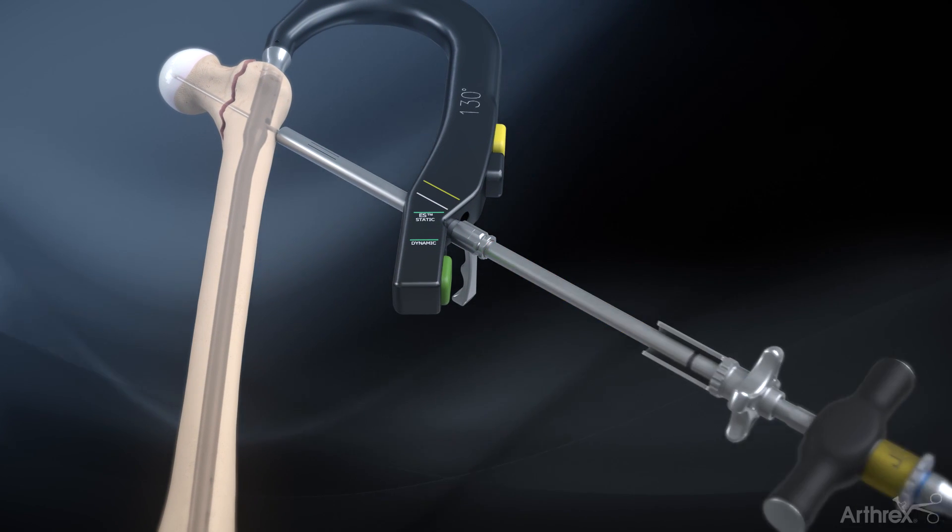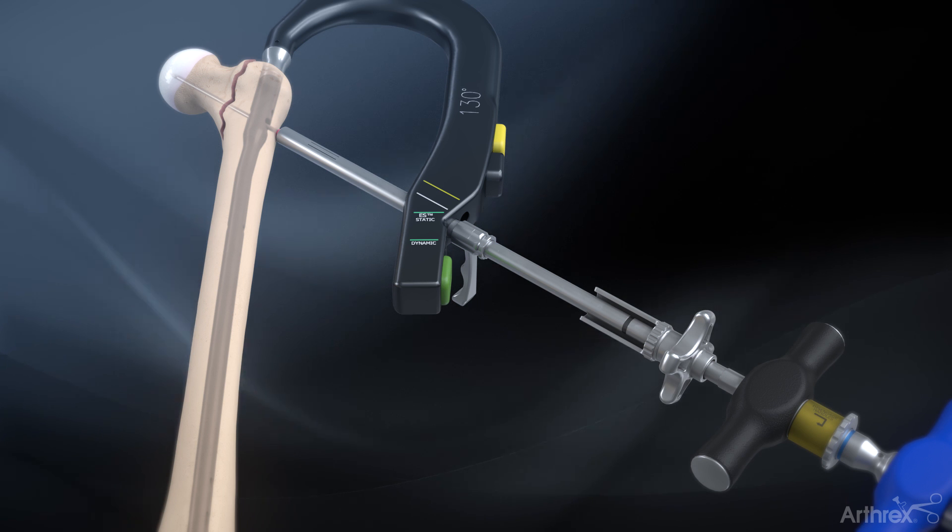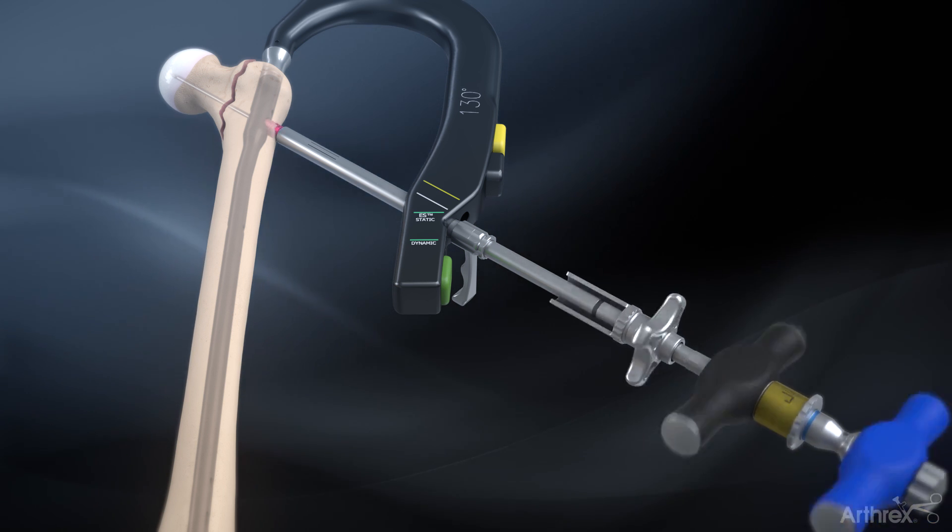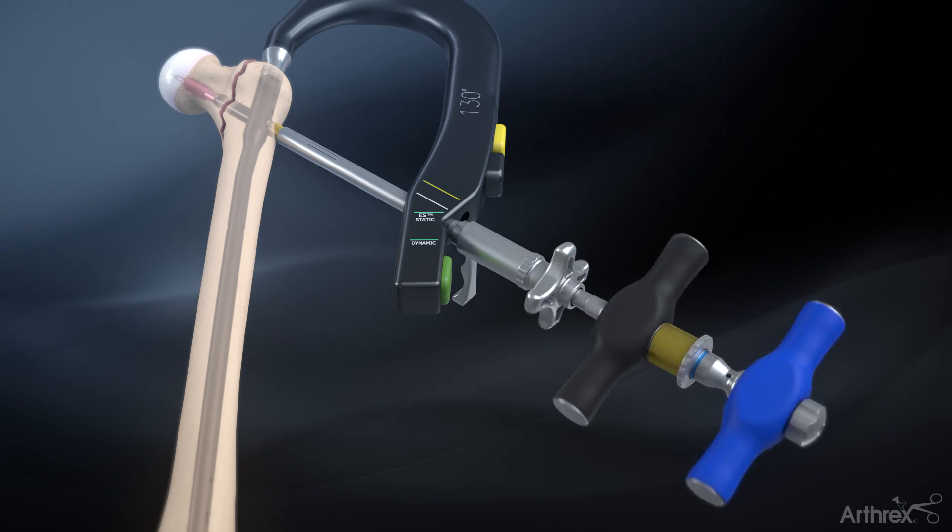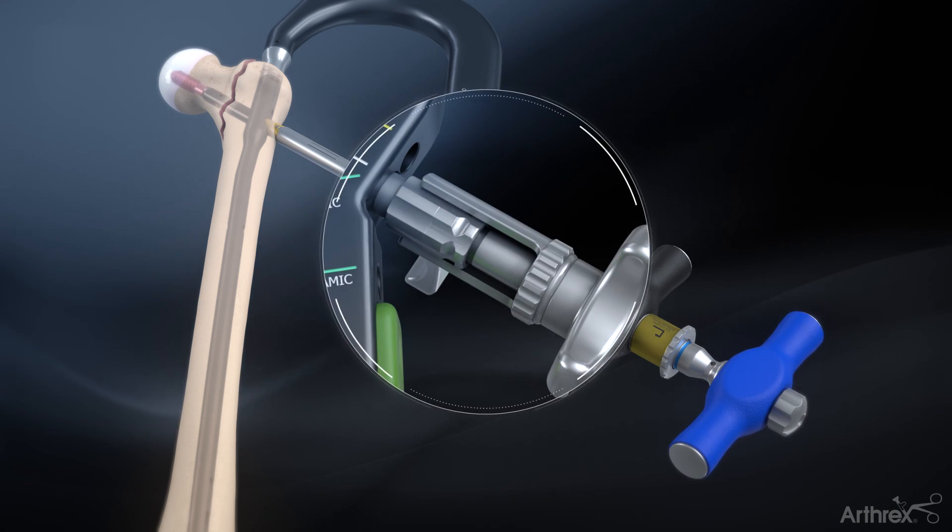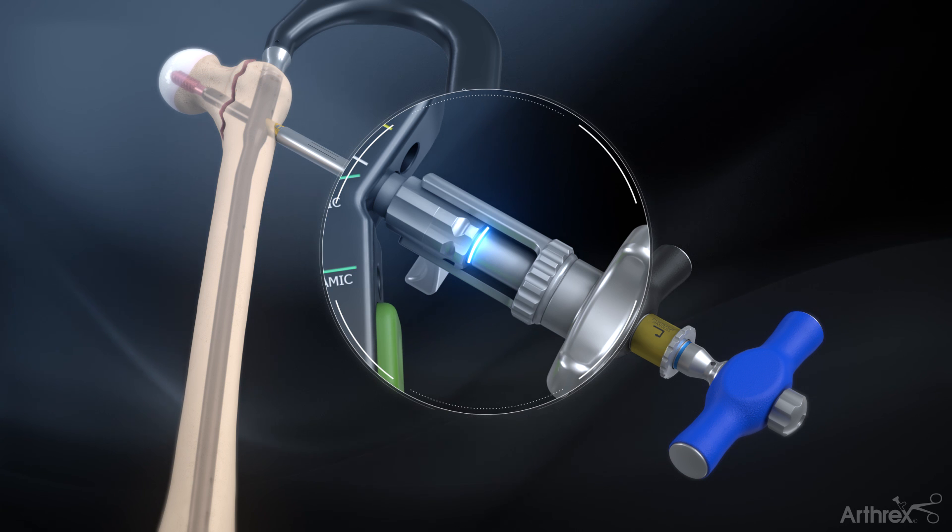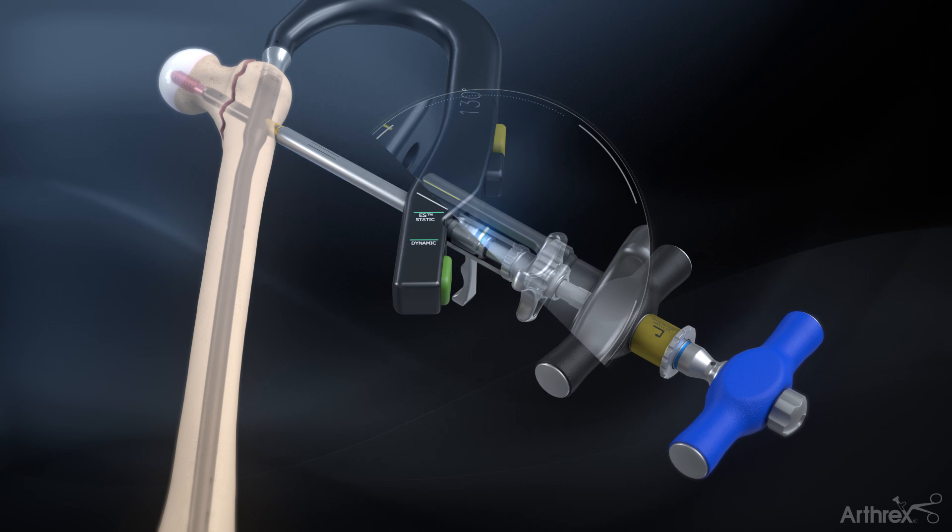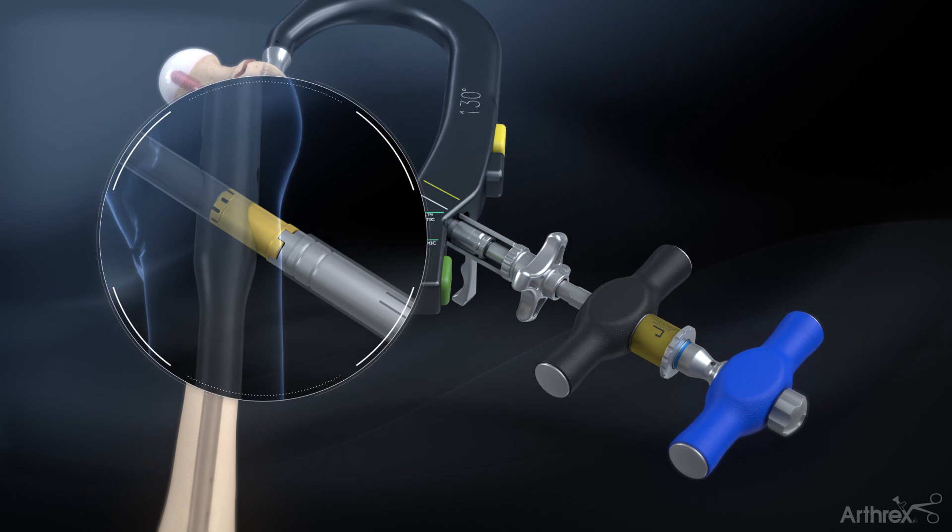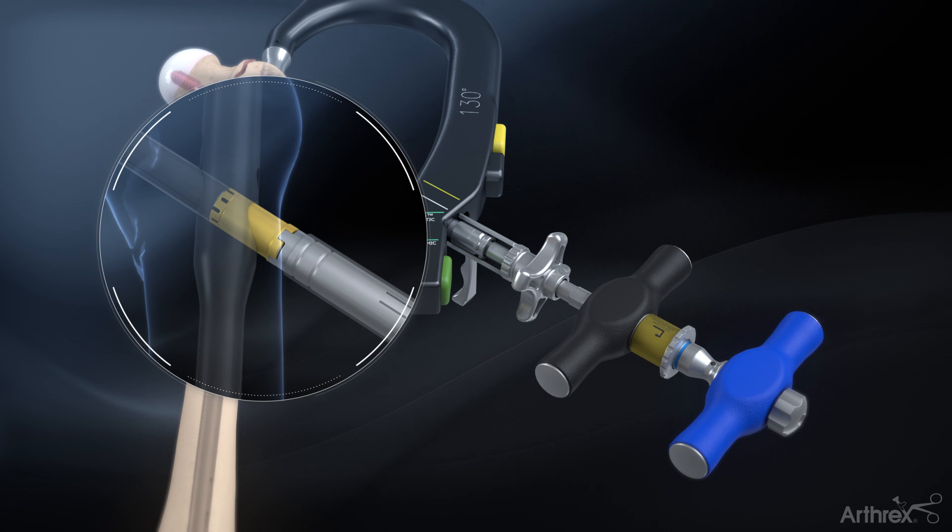Slide the lag screw inserter assembly over the guide pin and through the lag screw sheath. Rotate the assembly clockwise with the blue handle. When the black laser marking on the inserter reaches the sheath, the lag screw has exited the other end of the sheath. It is recommended to insert the lag screw further if intraoperative compression is planned.